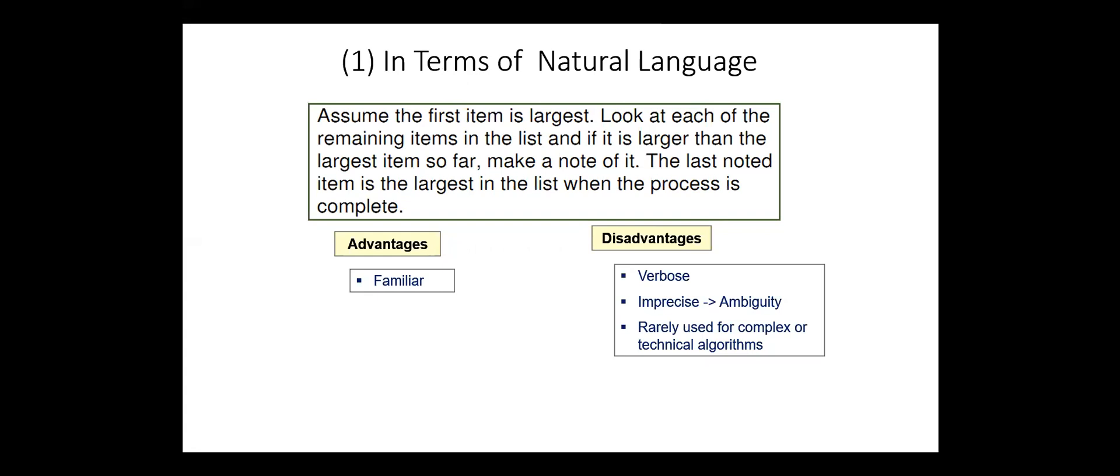First, we can represent an algorithm in terms of natural language. Assume, for example, that we want to find the largest number in an array or list. We can describe the algorithm as follows: Assume the first item is largest. Look at each of the remaining items in the list, and if it is larger than the largest item so far, make a note of it. The last noted item is the largest in the list when the process is complete.